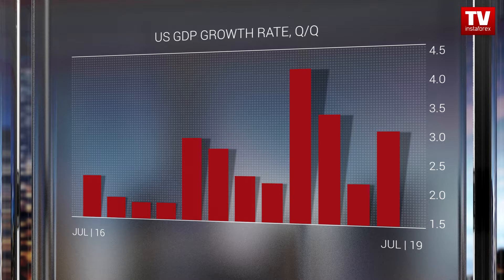On Friday, the US will deliver the preliminary estimate of the GDP growth rate for the second quarter. Analysts expect American economic expansion to slow down to 1.8% from 3.1% on a quarterly basis. Such a steep decline may remind market participants and the Federal Reserve about the necessity to take certain measures for boosting economic growth, which may include an interest rate cut.